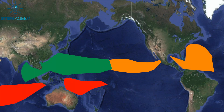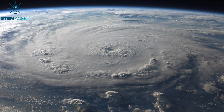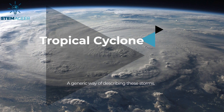Hurricanes occur in the Atlantic Ocean and the Northeast Pacific Ocean, east of the International Dateline. Typhoons occur west of the International Dateline in the Northwest Pacific Ocean near Asia. Cyclones occur south of the equator in the Southwest Pacific Ocean and the Indian Ocean. For the purposes of this video, we will refer to these storms as tropical cyclones, as this is a generic way of describing these storms.